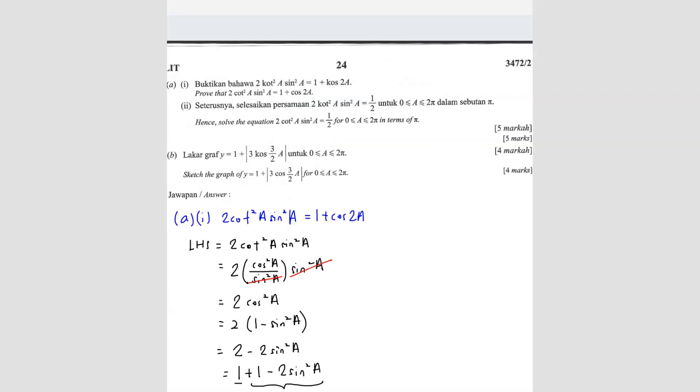So the second part, they are saying what? Hence, solve this equals to 1 over 2, then they give you the range of A, and then they want in terms of pi. So since they said hence, that means you have to use back from the first answer. So they said 2 cot square A sine square A equals to 1 over 2.